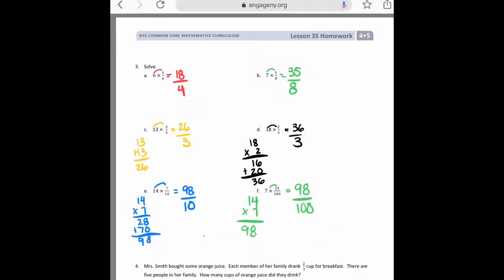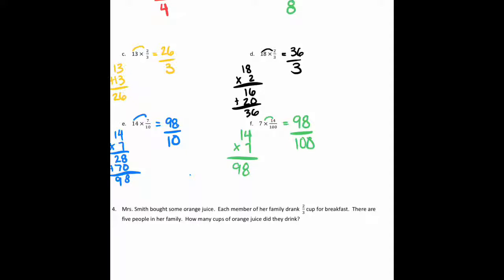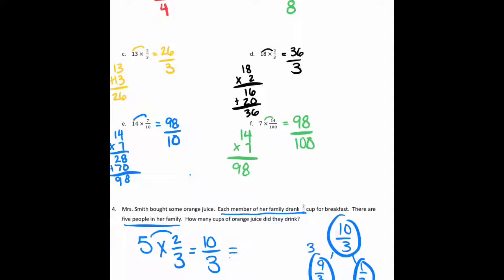On this very last one, we've got a word problem. So it says, Miss Smith bought some orange juice. Each member of her family drank two-thirds cup for breakfast. There are five people in her family. How many cups of orange juice did they drink? Well, I could add two-thirds five times, or I could say five times two-thirds, which is pretty easy. Five times two gives you ten. So I have ten-thirds. Now, it would be weird to tell somebody you drank ten-thirds cups of orange juice, so I'm going to change that back into a mixed number, just because that's typically what we do with word problems. And so I could pull out nine-thirds, which is equal to three wholes, plus that other third. So all together, they drank three and one-third cups of orange juice. All right, hope this was helpful.